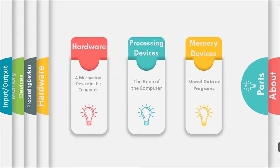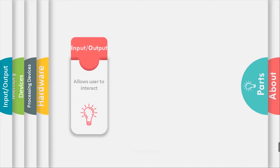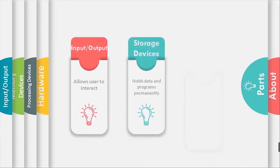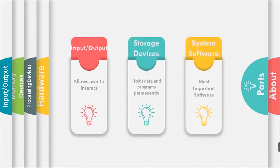Hardware is a mechanical device in the computer. Processing devices are the brain of the computer. Memory devices store data or programs. Input and output allows the user to interact. Storage devices hold data and programs permanently.